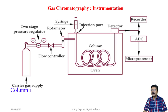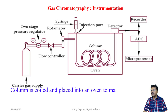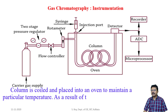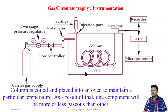The column is coiled and placed into an oven to maintain a particular temperature. As a result, one component will be more or less gaseous than another. The function of the oven is to maintain a particular temperature for the column.